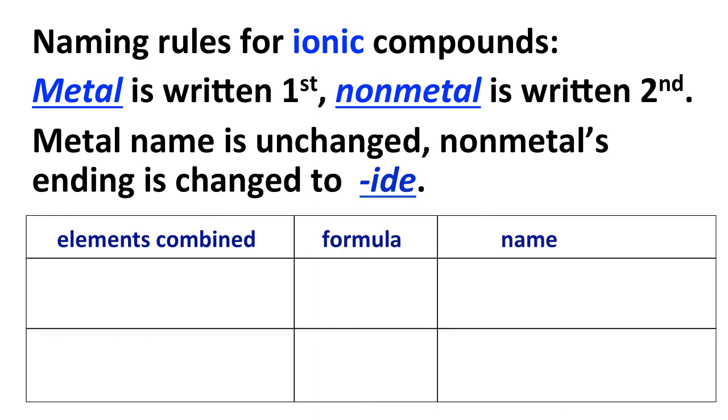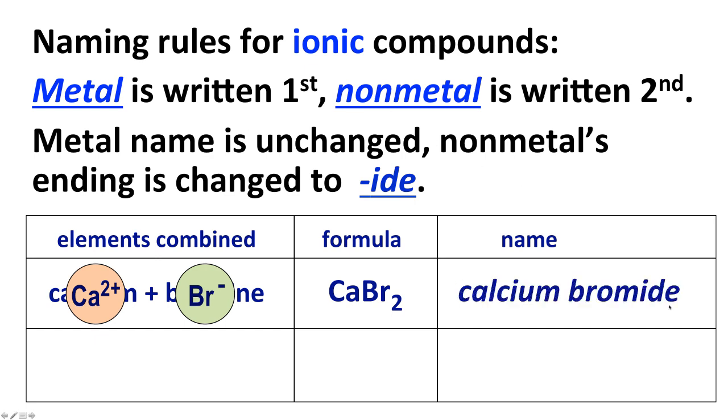For a couple examples, if we combine calcium and bromine, calcium makes a plus two ion. Bromine makes a minus one ion. We need two bromines, two Br minus ions for every one calcium two plus ion. So the formula is CaBr2, and we call that calcium bromide. We change the bromine ending to -ide. Notice we don't have to specify the two because any chemist is going to know what the formula will be once you've specified the name of the compound.